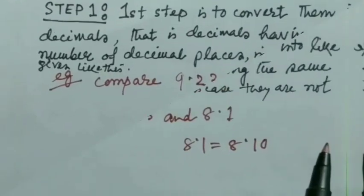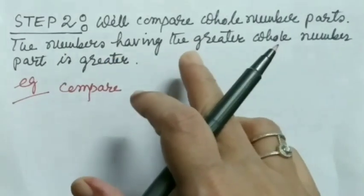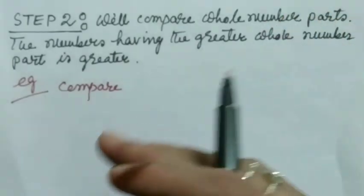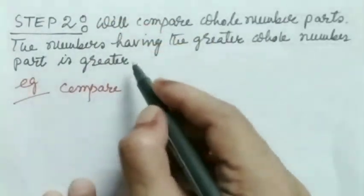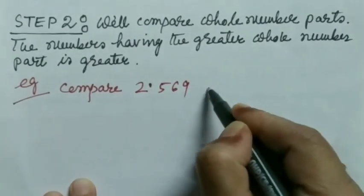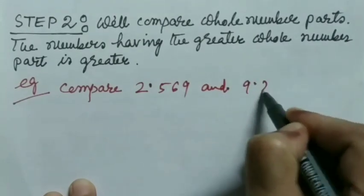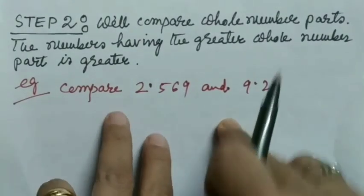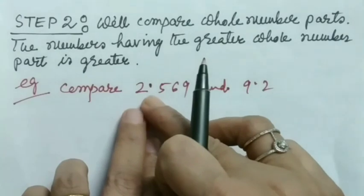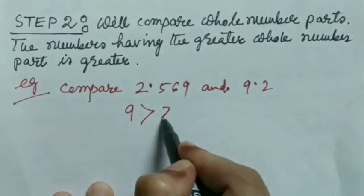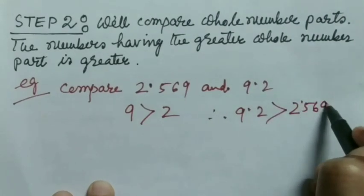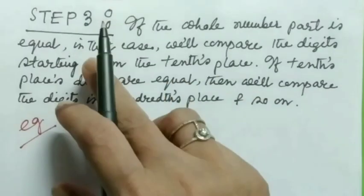Step number two: we will compare whole number parts. The numbers having the greater whole number part is greater. For example, let me take an example like 2.569 and 9.2. Now here you see, just we will concentrate on whole number parts, that means left hand side of the decimal point. Here as 9 is greater than 2, therefore 9.2 is greater than 2.569.